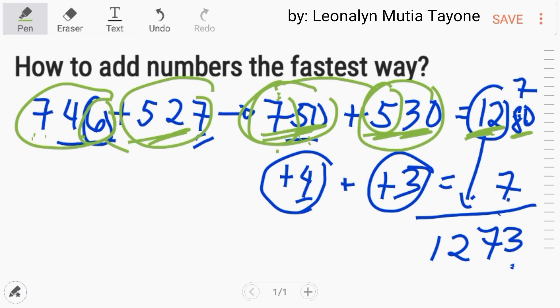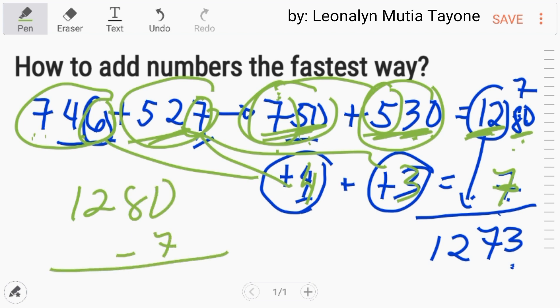Paano naging 70? Nag-add ka ng 4. Paano naging 30? Itong 7 na mo, nag-add ka ng 3. 4 plus 3, that is 7. Itong 7 na ito, yan yung i-deduct mo sa 1,280 mo. Mag-deduct ka lang ng 7. Anong pare sa 7? That is 3. Yung 8 mo, magiging 7 na yan. Kasi nag-minus ka na, nag-carry out ka dyan. Kaya nag-carry out ka para maging 10 to 0 mo. And then, itong 12, i-bring down mo na. The answer is 1,273.